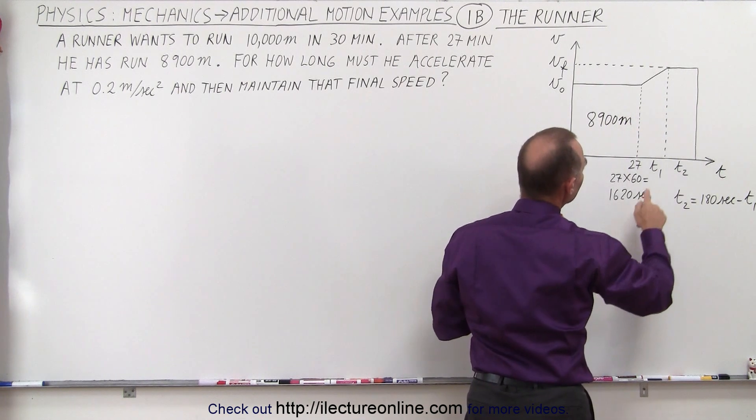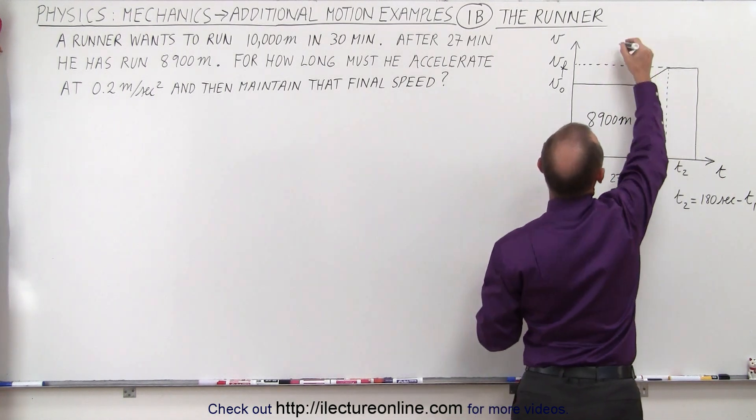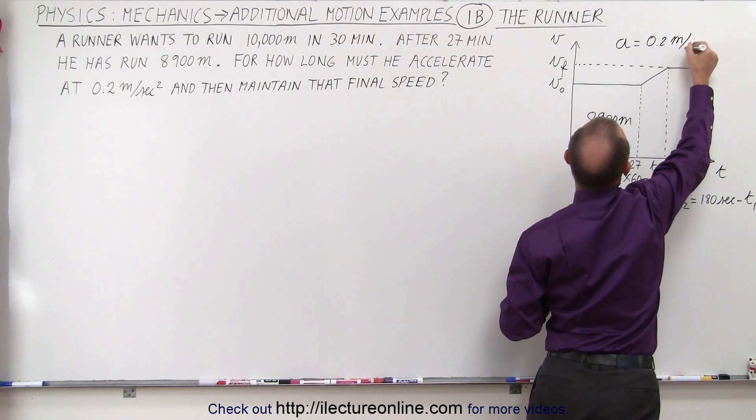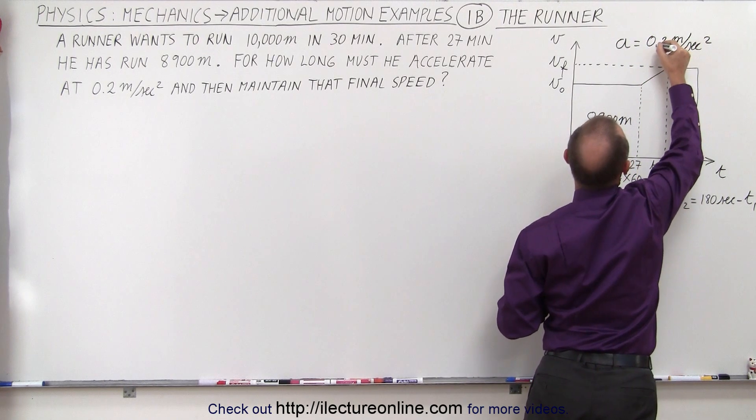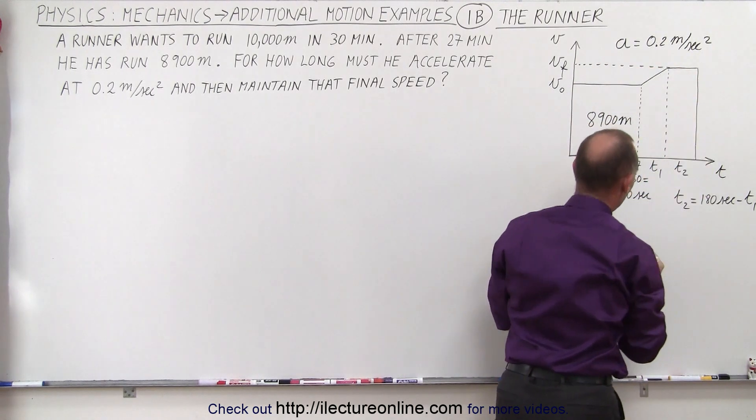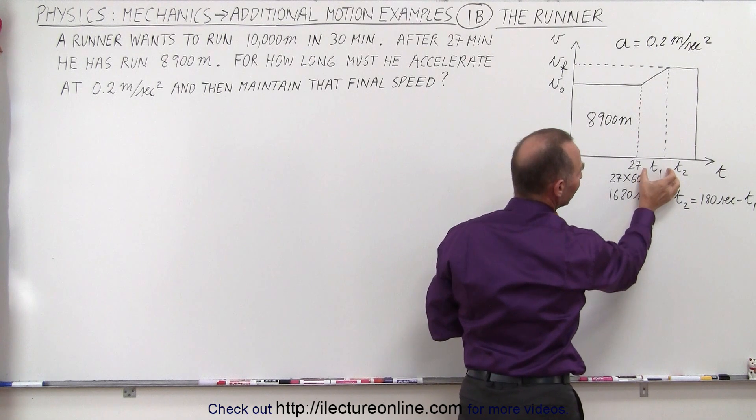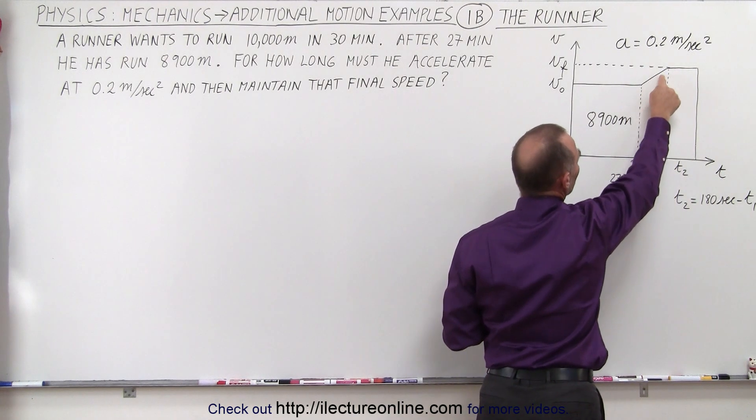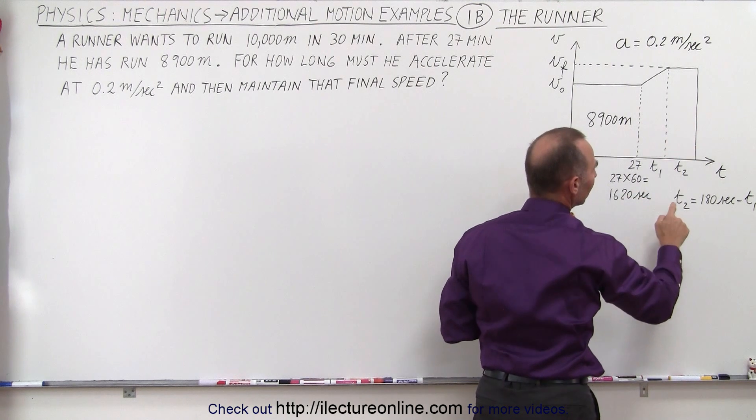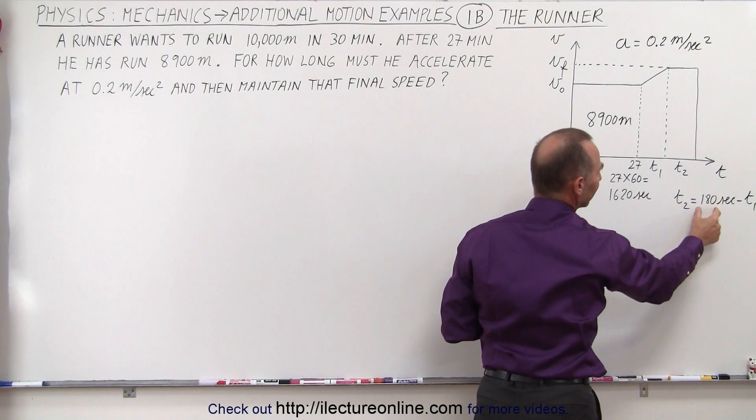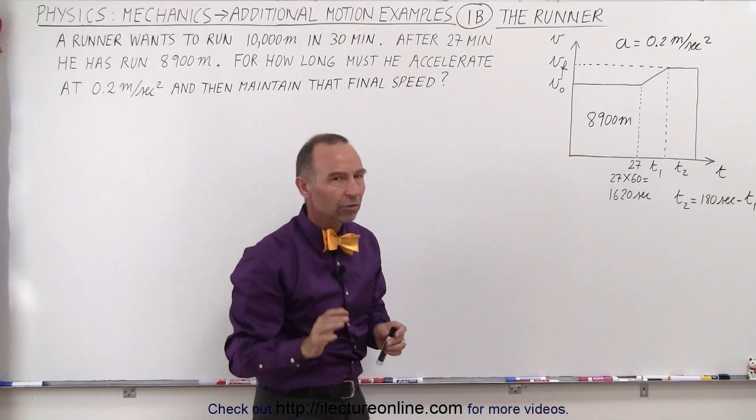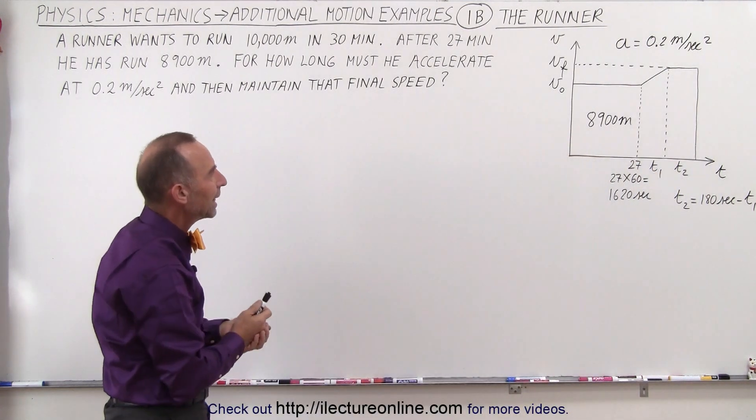Then he increases his speed. He accelerates. The acceleration is equal to 0.2 meters per second squared. And so then he reaches a new final velocity. He maintains that for the remainder of the race. He spends t1 seconds to get to the new speed and t2 seconds to finish the race. And t2 is therefore 180 seconds, the three minutes he has left, minus the time spent to accelerate. So knowing all that, where do we begin?